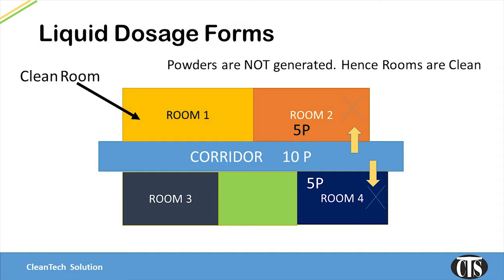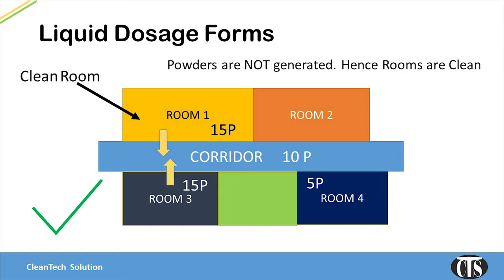Hence, if the corridor is kept at high pressure in a liquid manufacturing area, the dirty air of the corridor will go into the room when doors are open. So exactly the opposite of what is done in solid dosage form manufacturing is done here. The rooms are kept at higher pressure and the corridors are kept at lower pressure, so air from the room flows into the corridor.